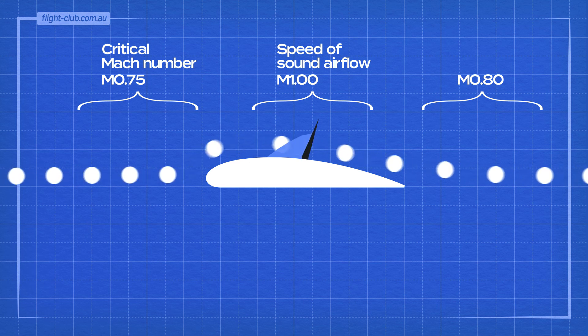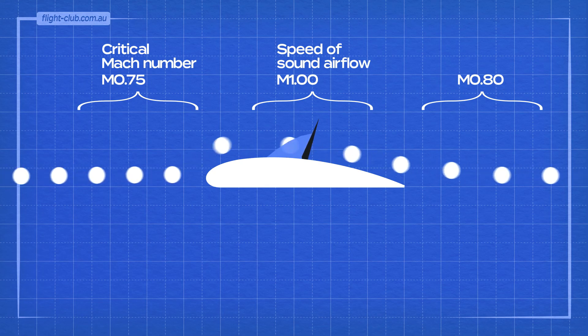In a normal shock, the supersonic flow is abruptly slowed down to subsonic flow before it reaches the trailing edge.